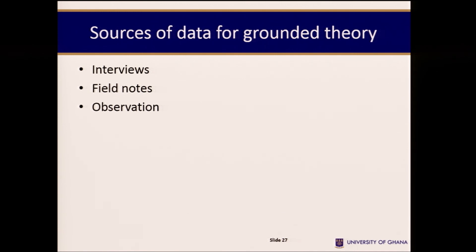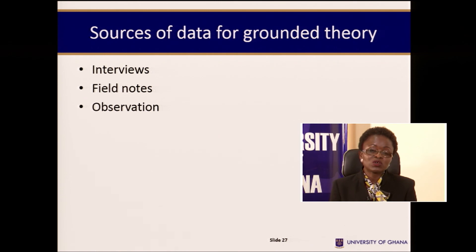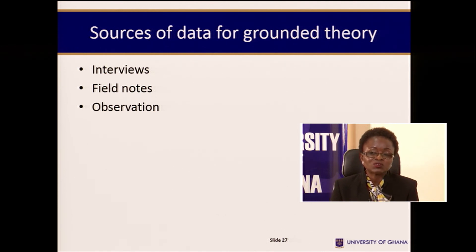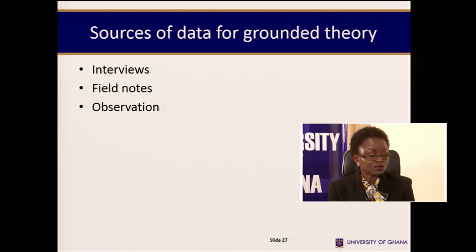Sources of data for grounded theory are interviews, field notes, and observation. As seen in the picture, the researcher is observing and writing, but at a certain point may also have to talk to people to add to the data. So the three main sources of data are: interviews, field notes, and observation.